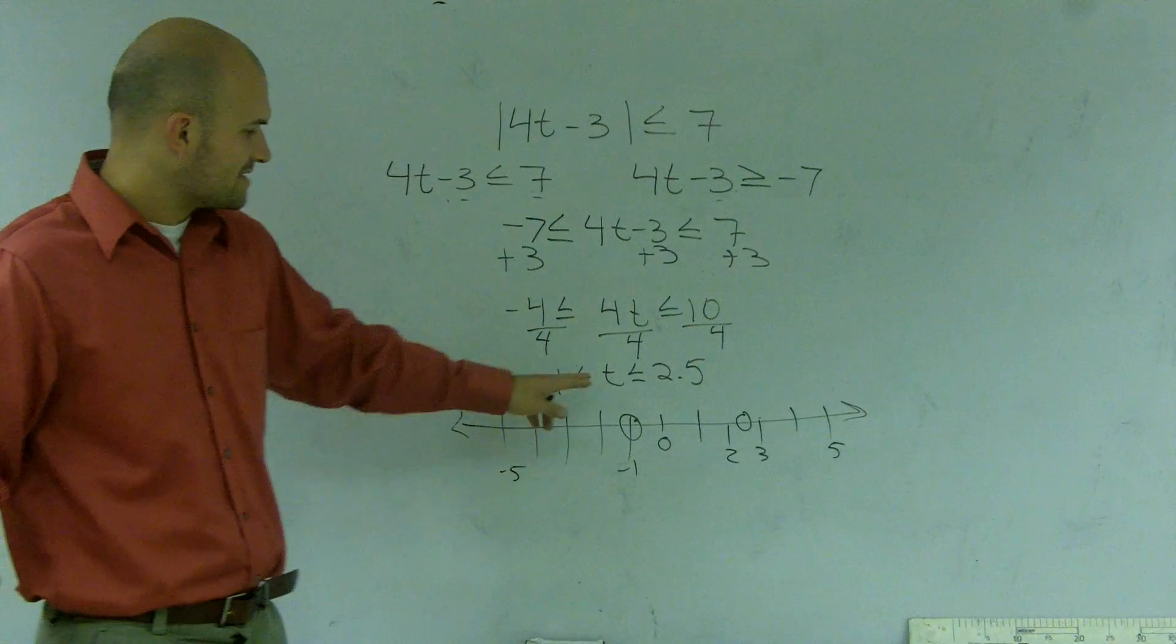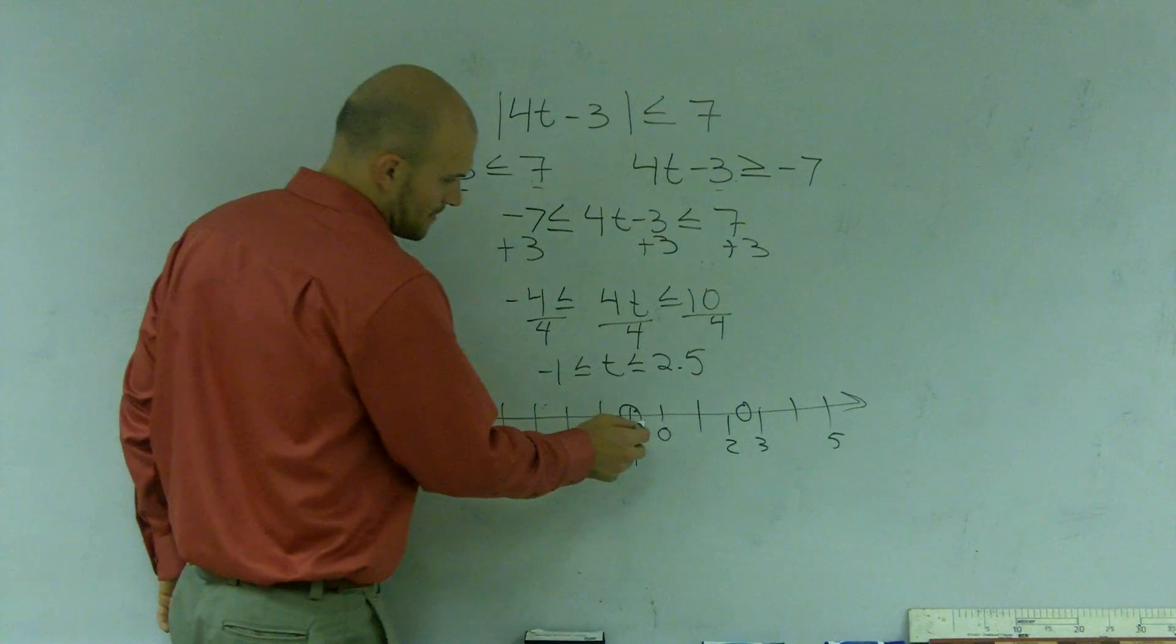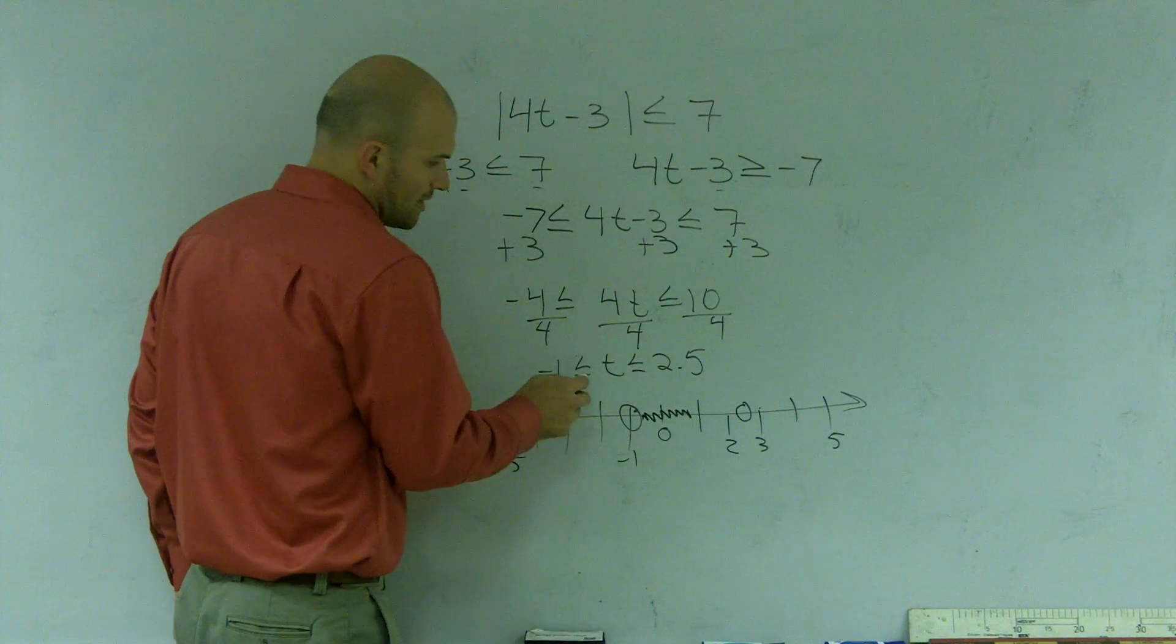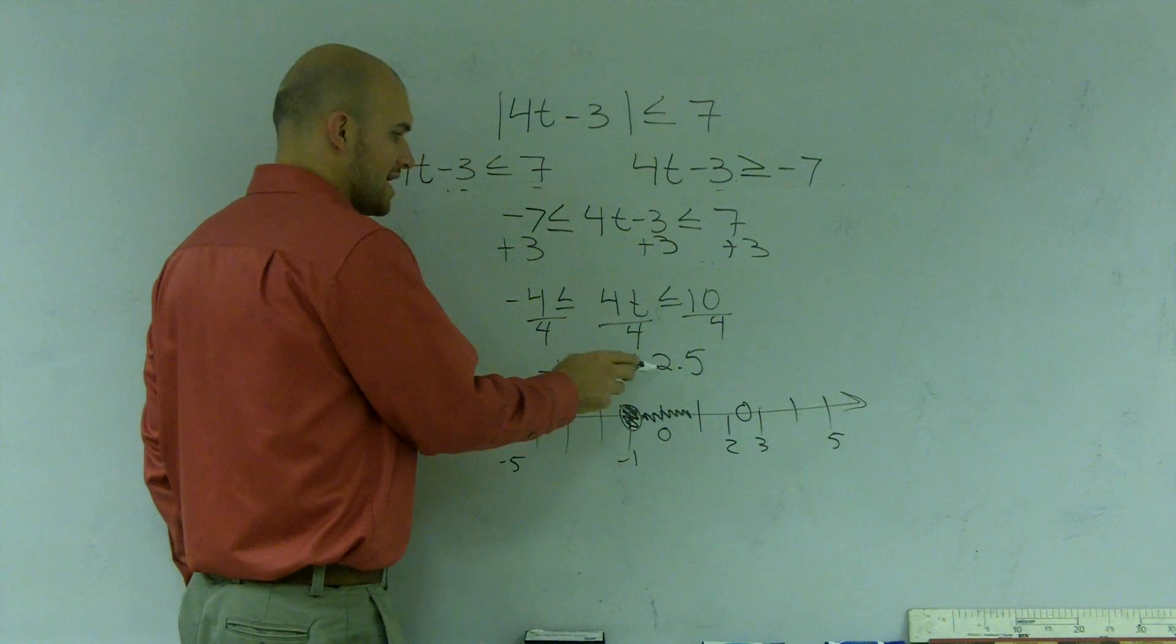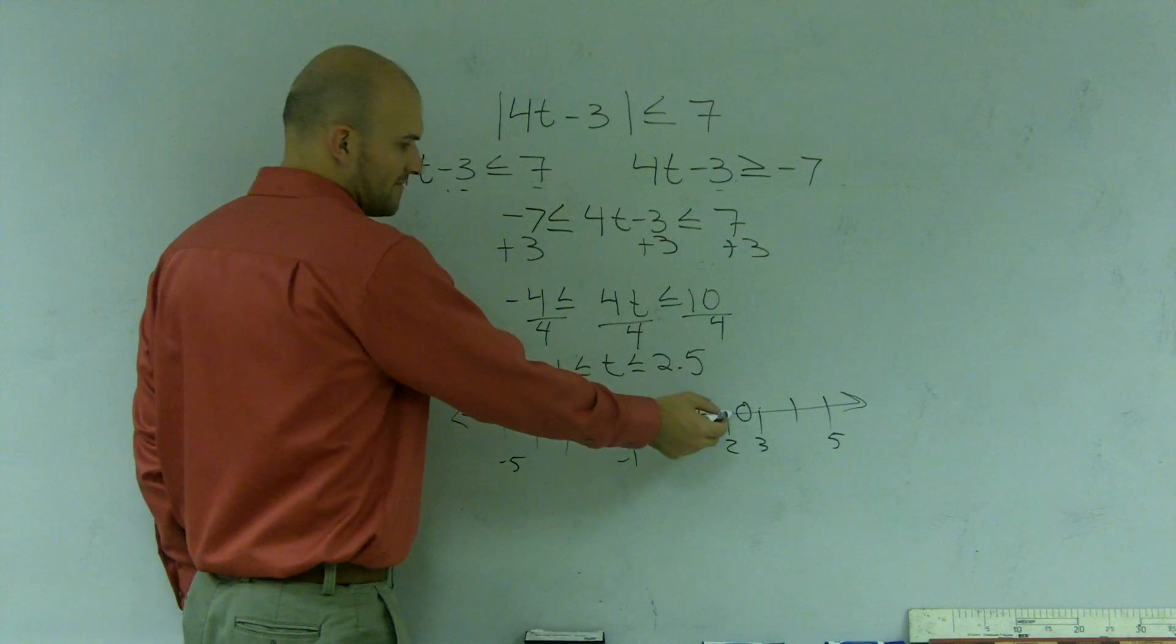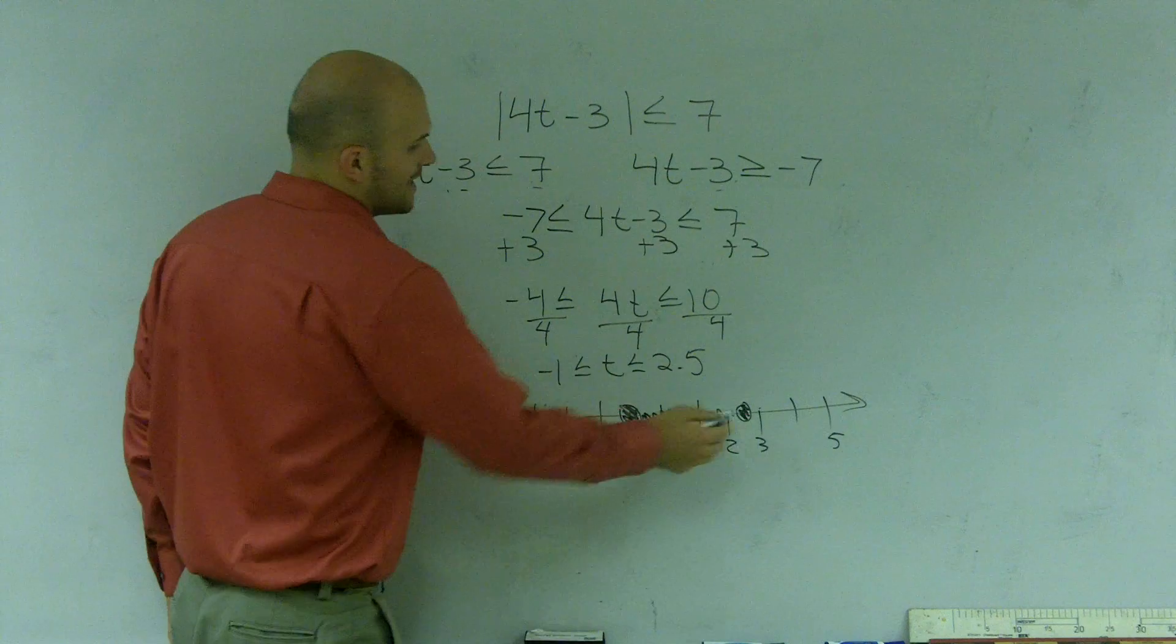Now it says t or the values for t are greater than or equal to negative 1. So it's also shaded inside here. But they also have to be less than or equal to 2.5. So I'll shade it as well.